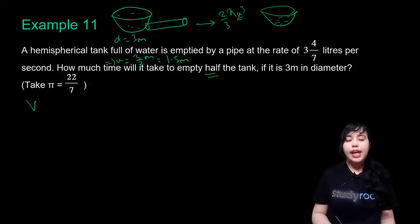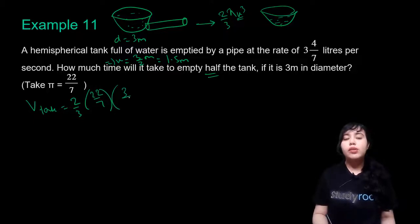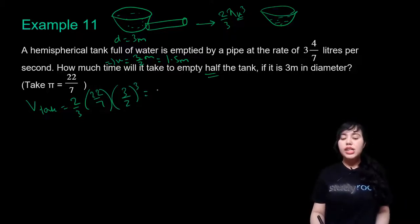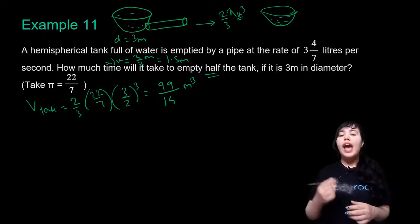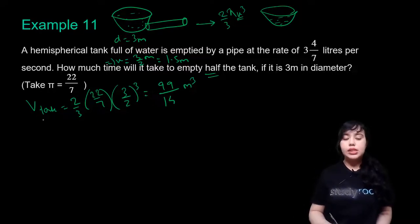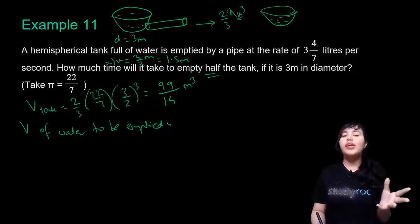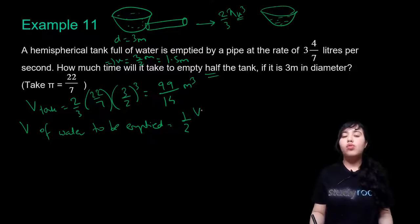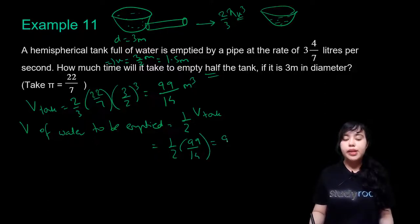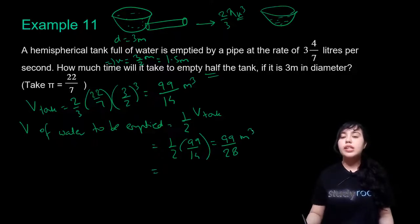Volume of the hemispherical tank = (2/3)πr³ = (2/3) × (22/7) × (3/2)³ = 99/14 m³. Volume of water to be emptied is half the tank: (1/2) × (99/14) = 99/28 m³. Converting to liters using 1 m³ = 1000 L: (99/28) × 1000 = 99,000/28 liters.